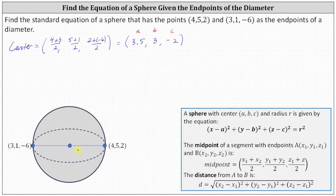Now we need to determine the length of the radius, which is the length from the center to an endpoint of the diameter. Notice that if we use the distance formula from the center, we have to use a decimal for one of the x-values. To avoid this, we'll determine the length of the diameter and then recognize the radius equals the diameter divided by 2.